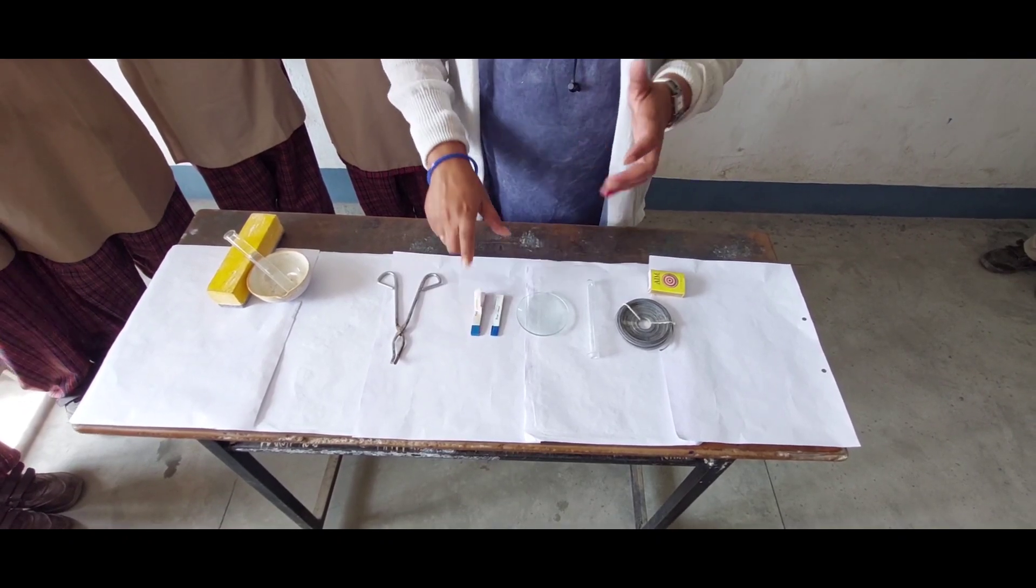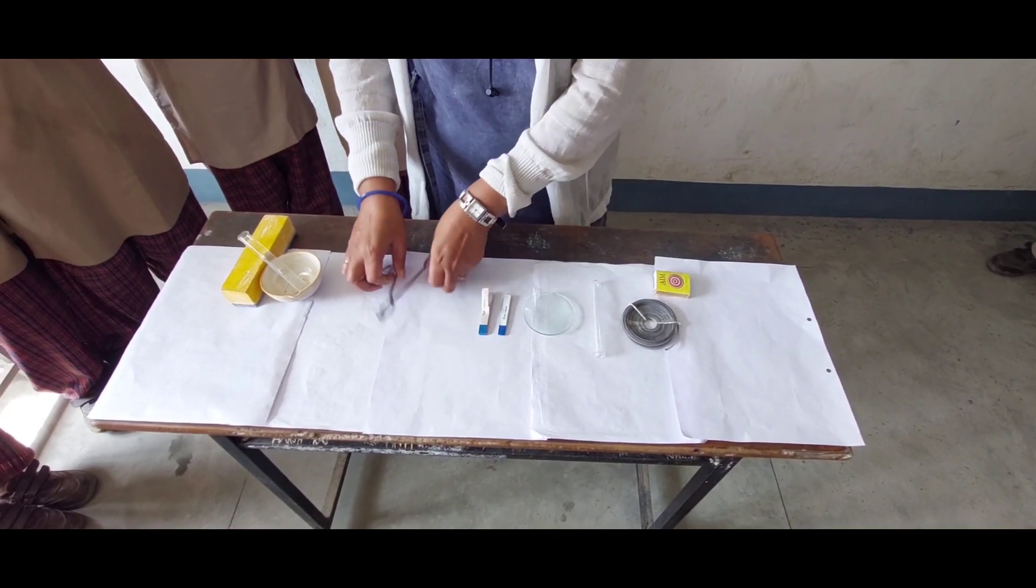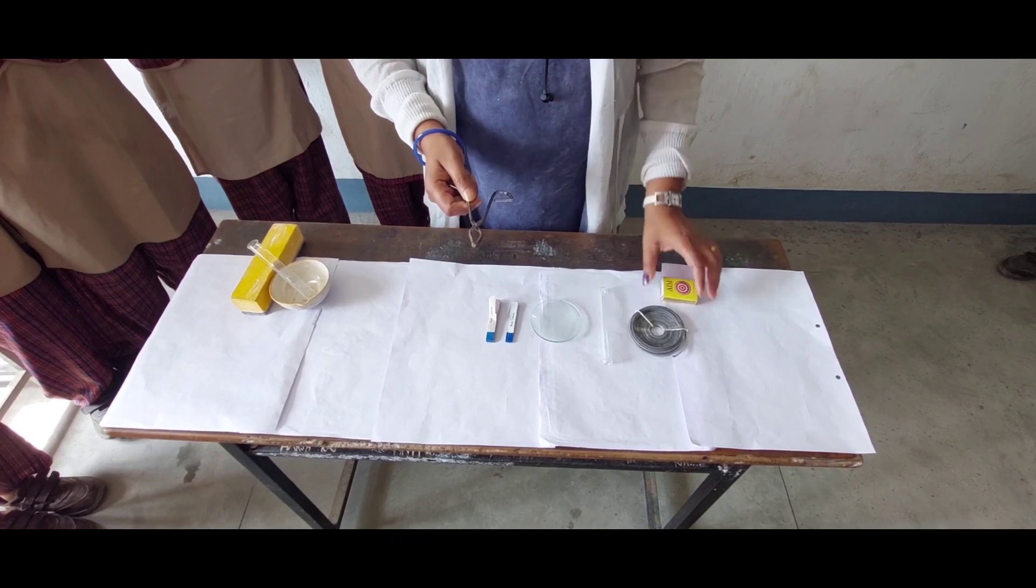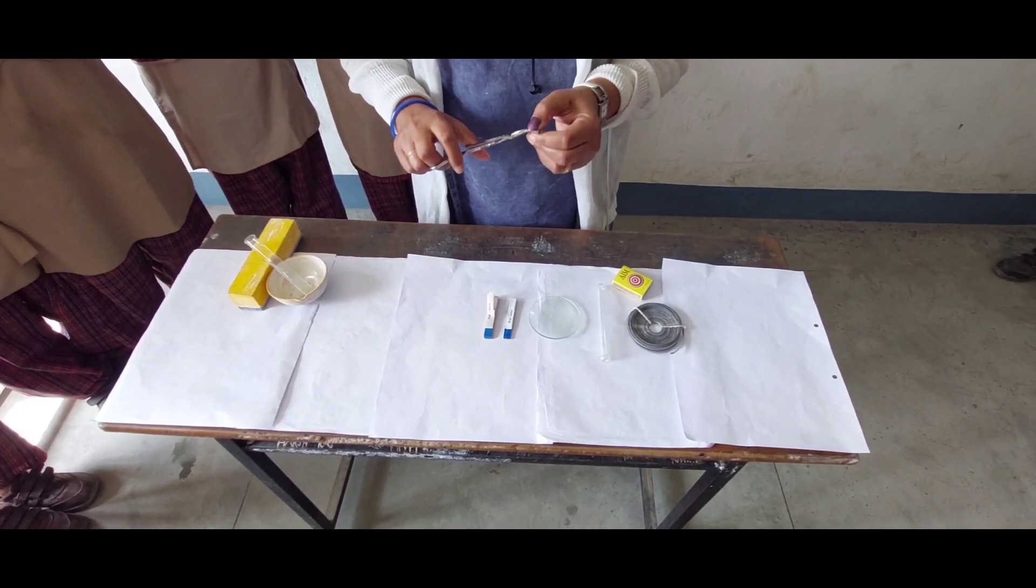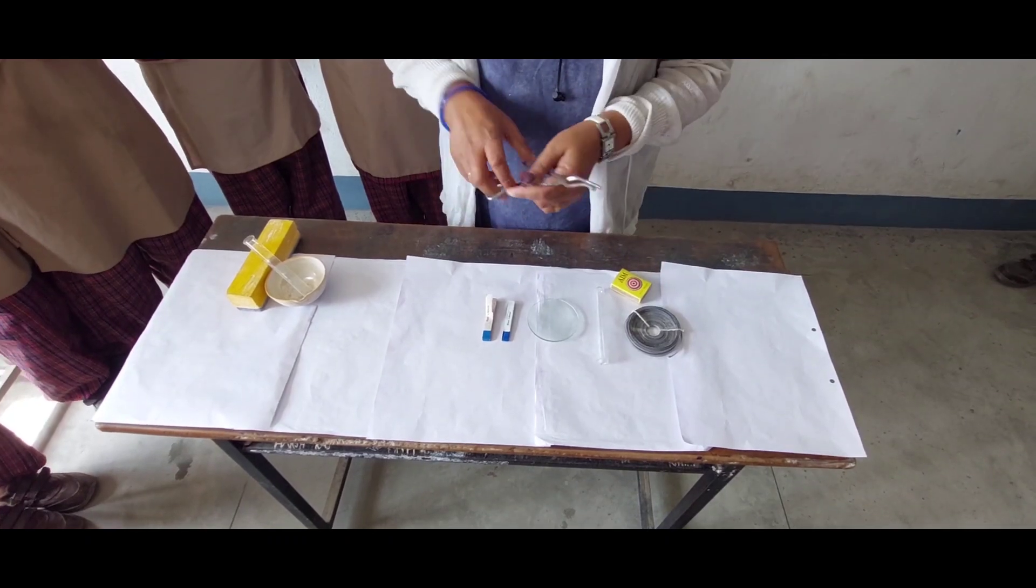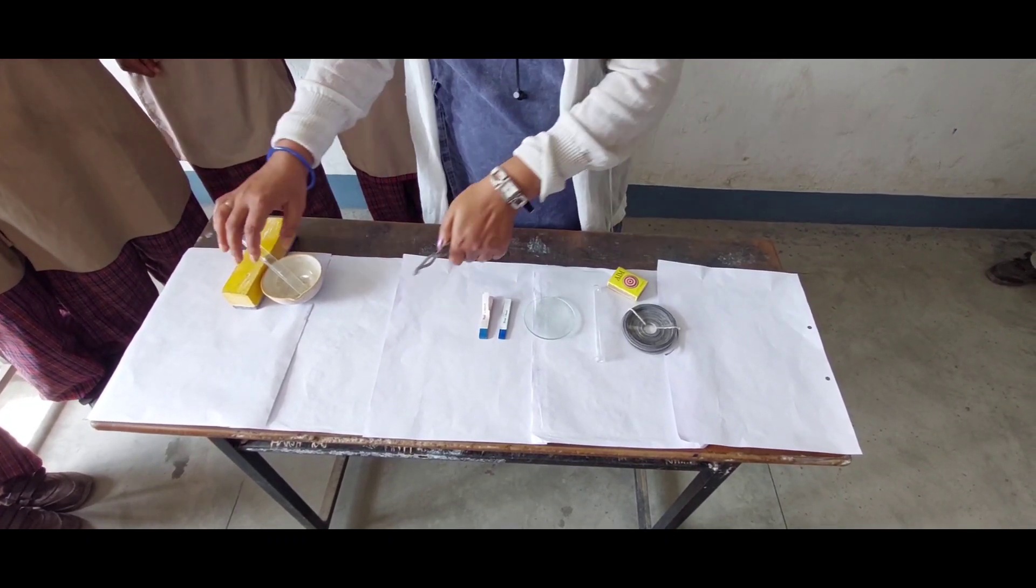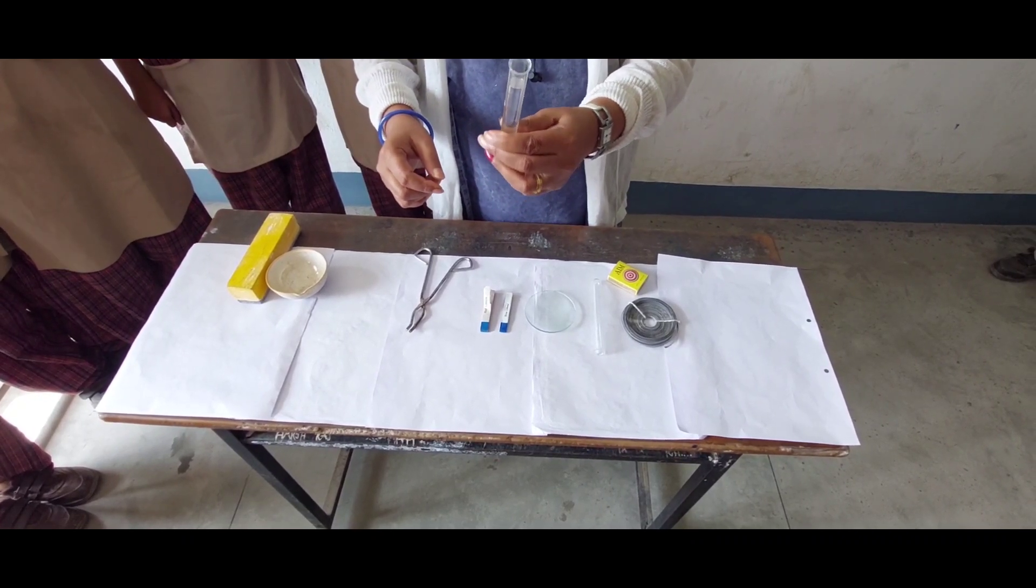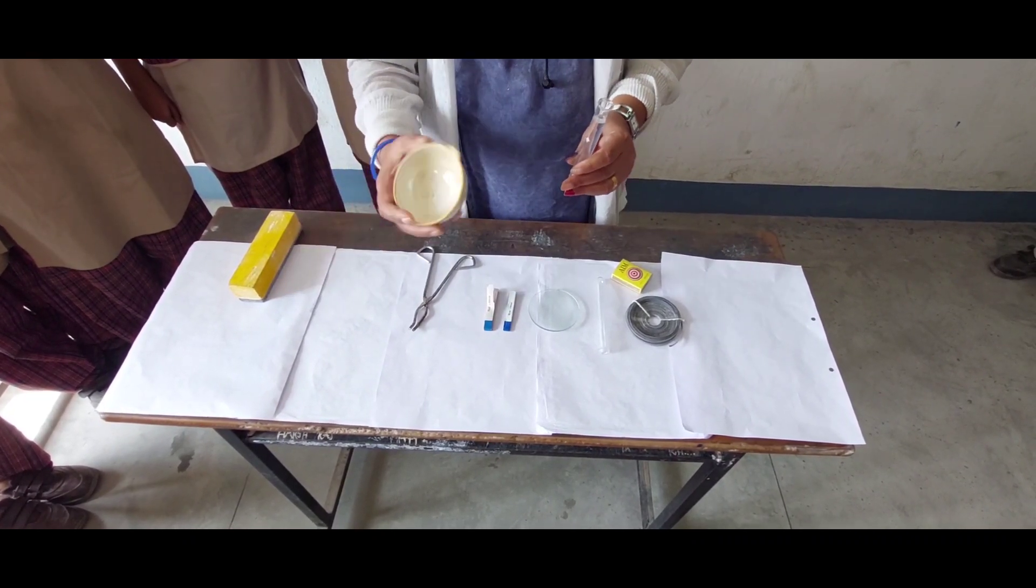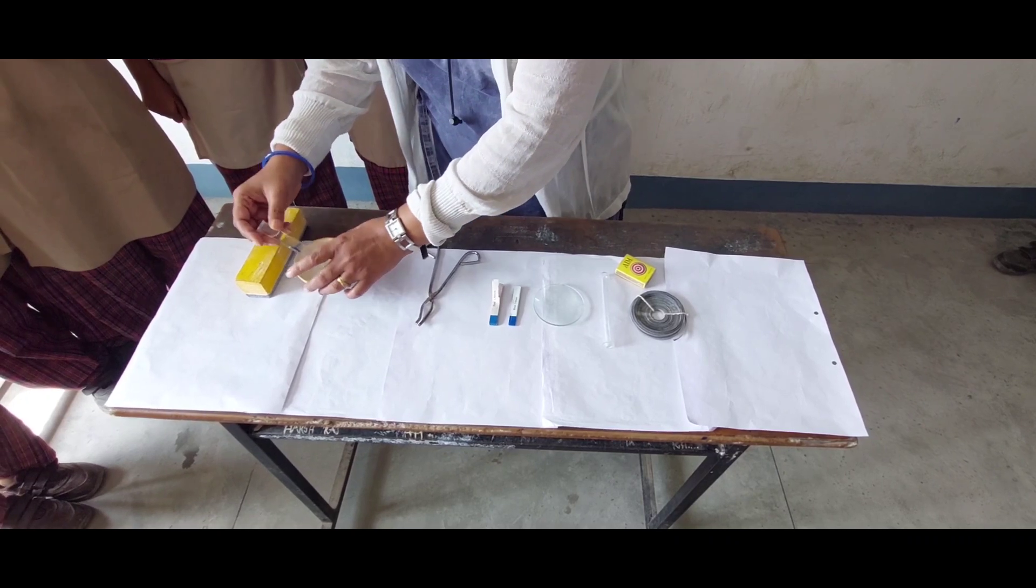This is tong and this is matchbox. We are using tong because we have to burn the magnesium ribbon. This is pure water in this test tube and this is china dish.